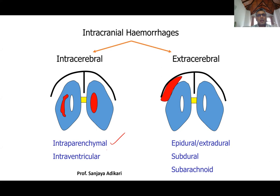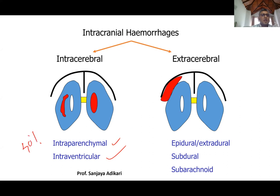Bleeding into the substance of the brain is called intra-parenchymal — parenchyma being the main cells or tissues of an organ. It can be intra-parenchymal or intra-ventricular bleeding. Usually, about 40% of intra-parenchymal hemorrhages that originally bleed into the substance of the brain later extend into the ventricular system, rather than bleeding directly into it. So they can occur together, not separately, most of the time.